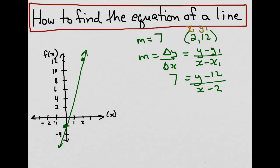I can write this as 7 over 1, and then just cross multiply, which gives us 7 times x minus 2 equals 1 times y minus 12. We then expand each side of the equation, and I would get 7x minus 14 equals y minus 12.